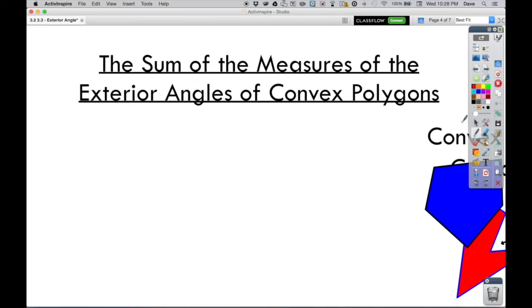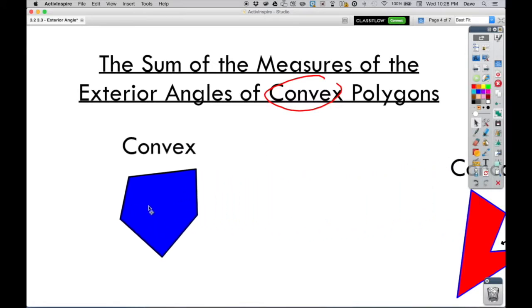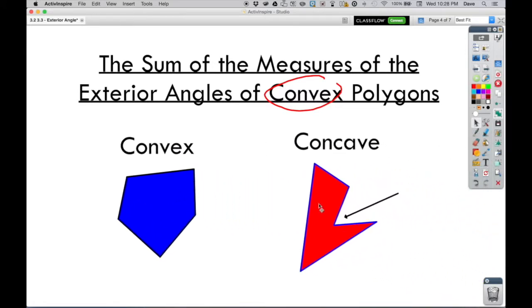Now, one thing we need to know is that what we're looking at here is the sum of measures of exterior angles of convex polygons. This rule does not apply to concave polygons.